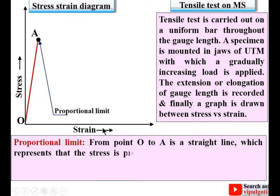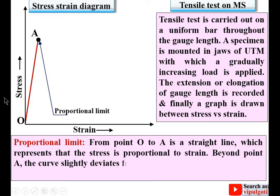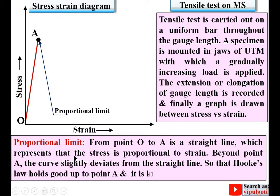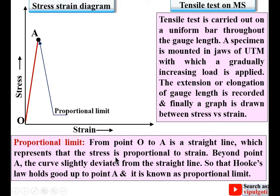From point O to A is a straight line, which represents that stress is proportional to strain. Beyond point A the curve slightly deviates from the straight line. Hooke's law holds good up to point A — Hooke's law states that stress is directly proportional to strain — and that is why point A is known as the proportional limit. In this region only, Hooke's law holds good.